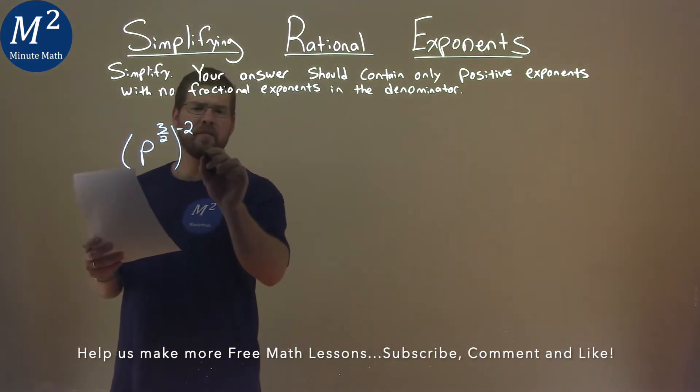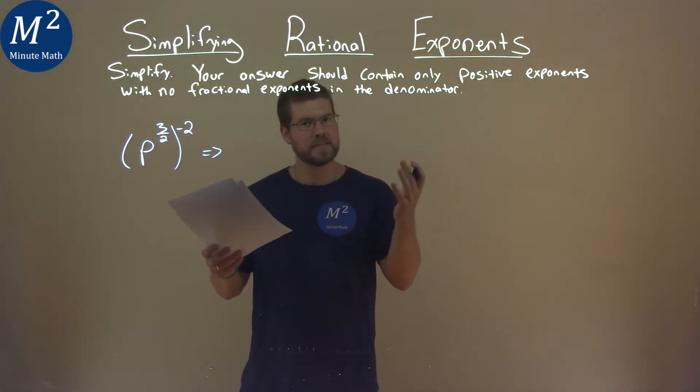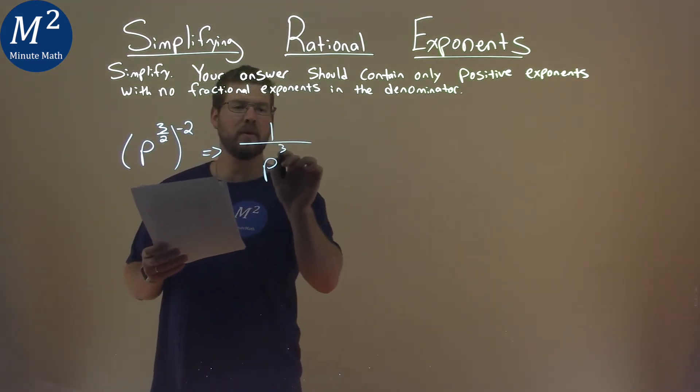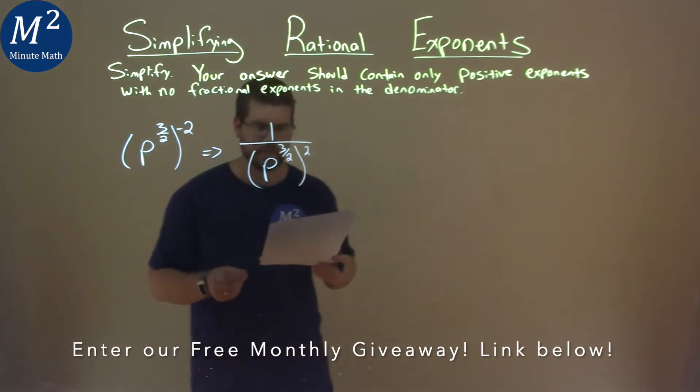Well, we know with our negative exponent, it's the same thing as 1 over whatever's on the inside to a positive exponent. So this is the same thing as 1 over p to the 3 halves power, all to the positive 2 power.